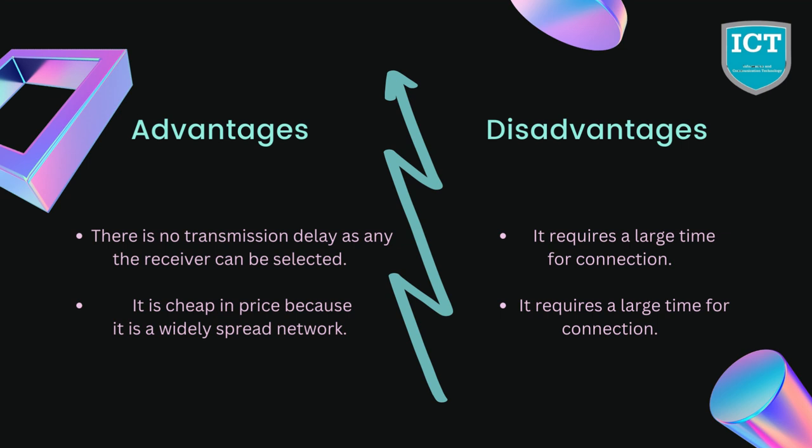Now let us talk about some disadvantages: it requires a large setup time to establish a connection and it has a low transmission speed. As for applications, the telephone network helps to connect people, it is used by business organizations to advertise their products, and it is also used around the world for recreational purposes.